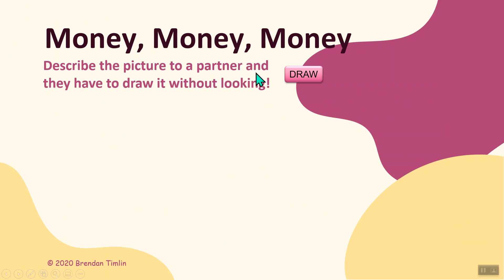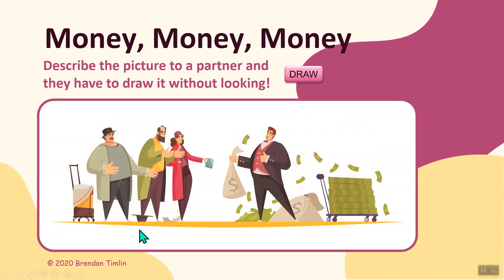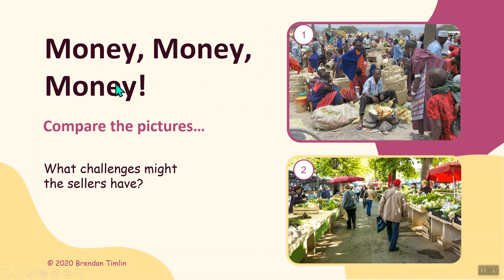Describe the picture to a partner and they have to draw it without looking. For example: a rich man is giving a bag of money to some poor people. There are three poor people who are begging, and the rich man has lots and lots of money. He has nice clothes, maybe he's a little bit fat.